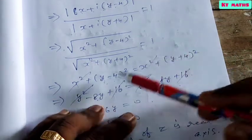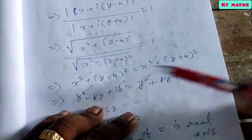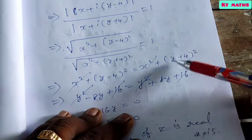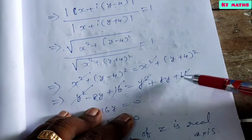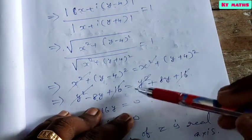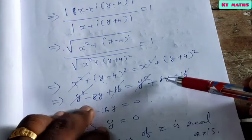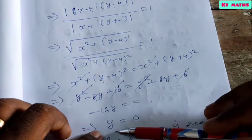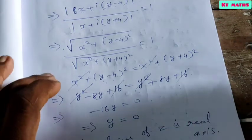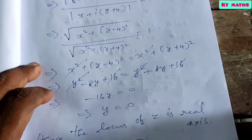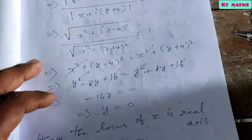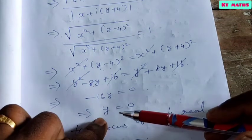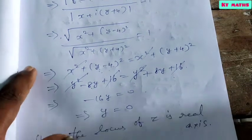Cross multiplying: x squared plus (y minus 4) squared equals x squared plus (y plus 4) squared. The x squared terms cancel. Expanding: y squared minus 8y plus 16 equals y squared plus 8y plus 16. The y squared and 16 terms cancel, giving minus 16y equals 0, so y equals 0. Hence the locus of z is the real axis.